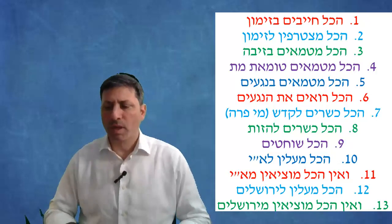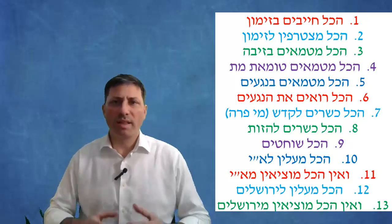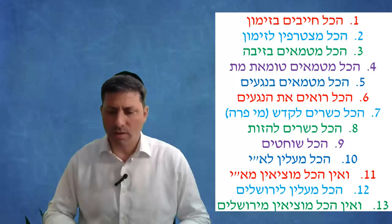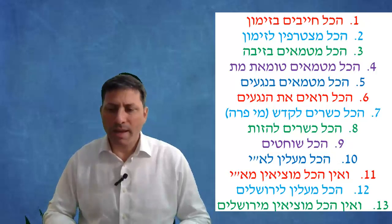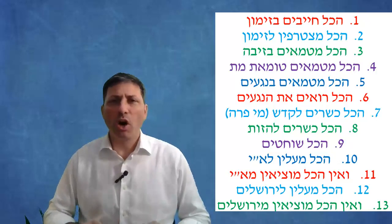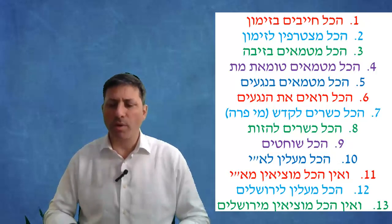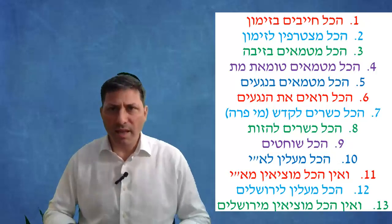Hakol mitamei b'negaim - everybody becomes tamei when they have a nega tzaraas. Comes to include a katan as well because it says adam. The fact that it says hazarua comes to be merabeh, include a woman. Now the Torah says ish by negaim, I would think maybe not a woman - no, a woman is not included in priya and perima, meaning she doesn't have to rip her clothes and let her hair grow long like a man does.